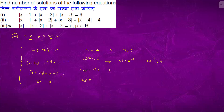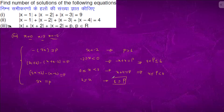For x between minus 2 and 0, minus x is between 0 and 2, so plus 4 gives 4 to 6, meaning p is between 4 and 6. For the next interval, x plus 4 equals p, and x plus 4 is between 4 and 6, so p is bigger than or equal to 6.